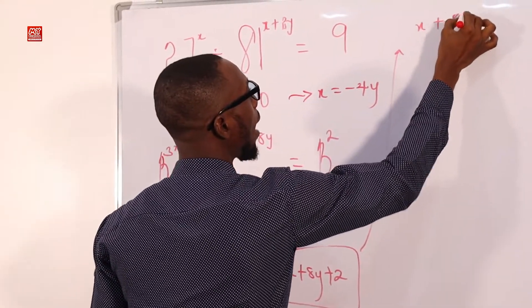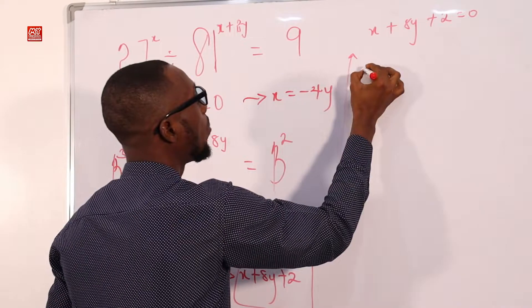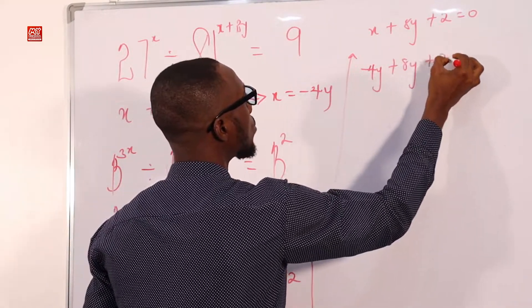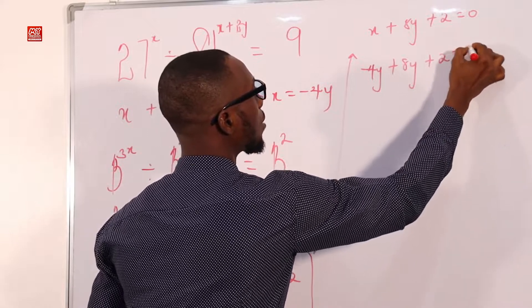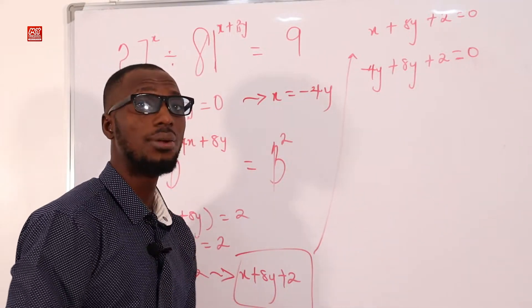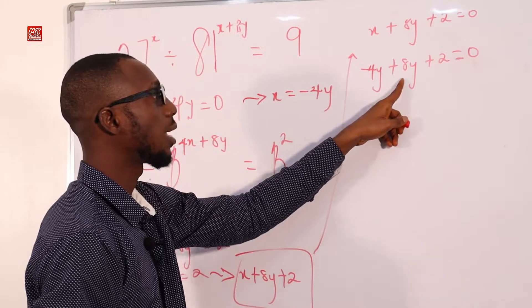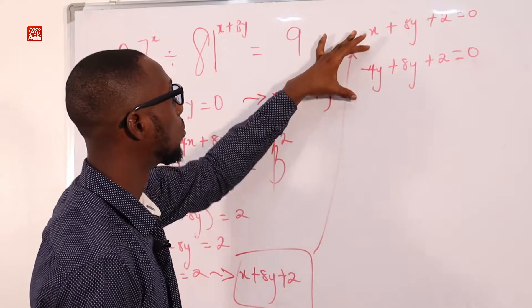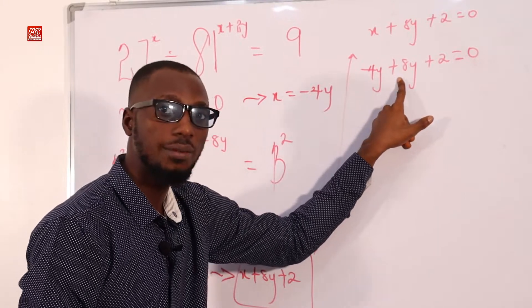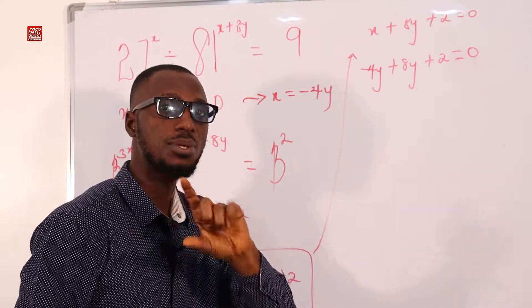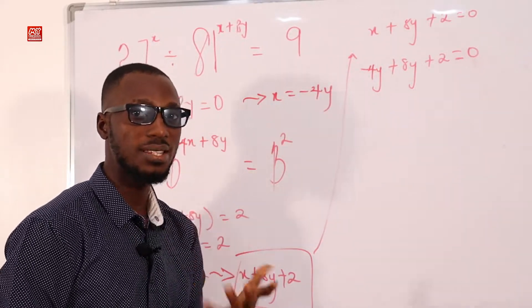Substituting X equals minus 4Y: minus 4Y plus 8Y plus 2 equals 0. Think of it like owing 4 Naira and having 8 Naira — you pay the debt and have 4 left. So minus 4Y plus 8Y gives 4Y. We have 4Y plus 2 equals 0. Sending 2 across: 4Y equals minus 2.